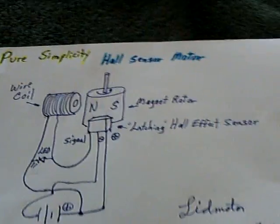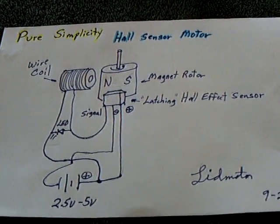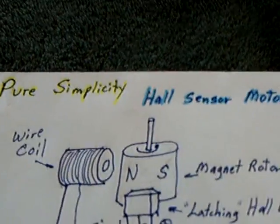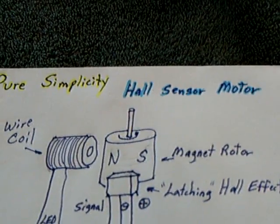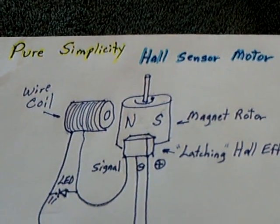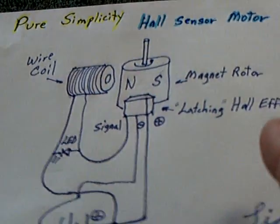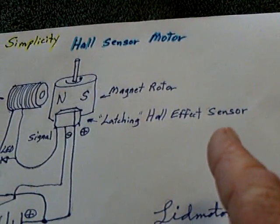Here it is. Here's the circuit. And like I say, I'm calling it the pure simplicity hall sensor motor. Because it doesn't get much simpler, folks. There's just one electrical component. That right there. It's a latching hall effect sensor.